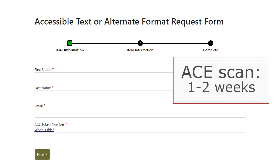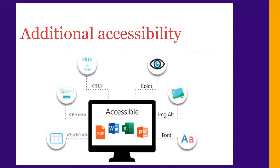If it needs to be scanned by ACE, it usually takes one to two weeks. We'll email you when your book is ready. Most of our alternate format services provide PDF files with basic OCR. If you need other formats or additional accessibility features, we also have text remediation services.